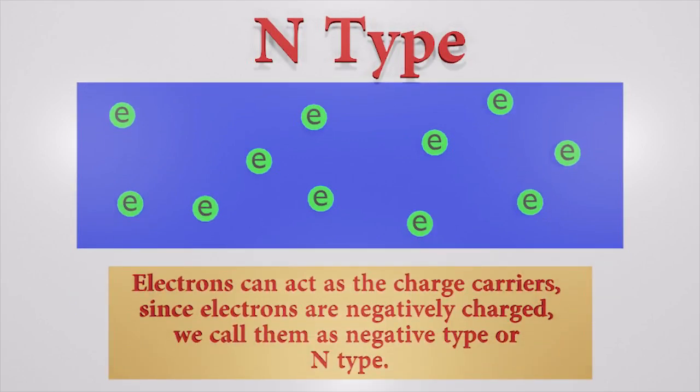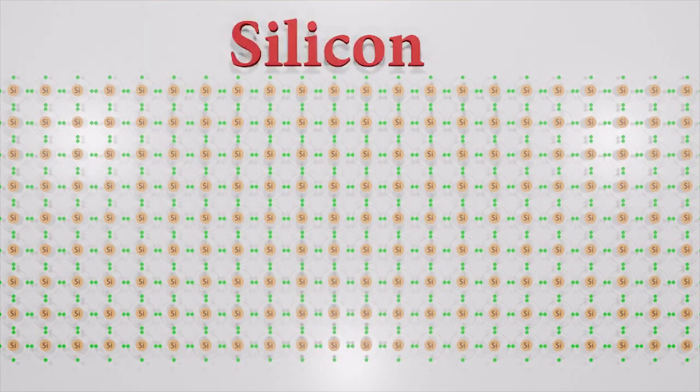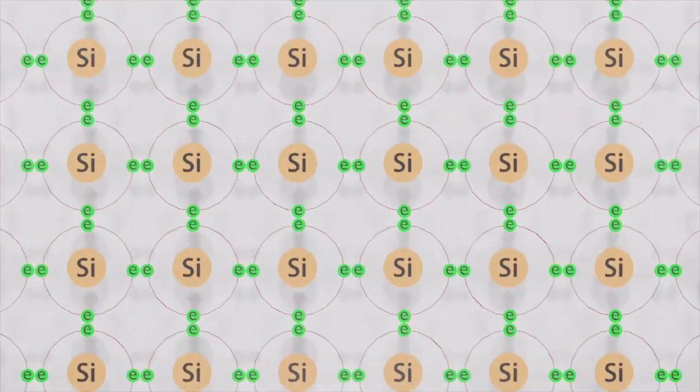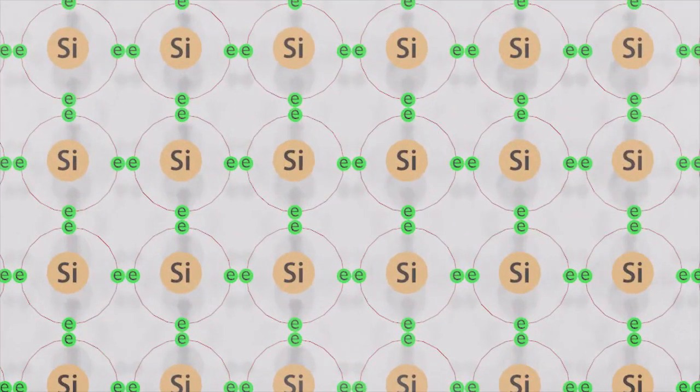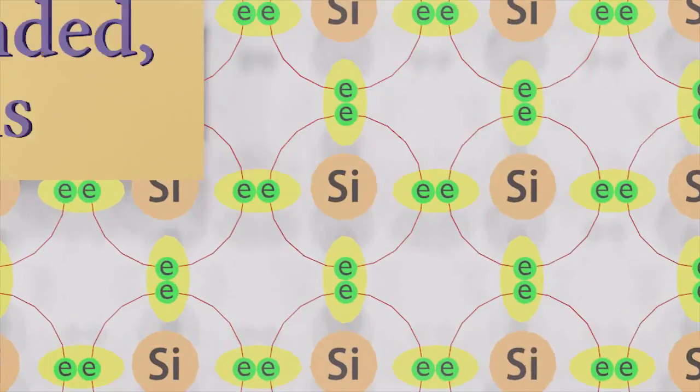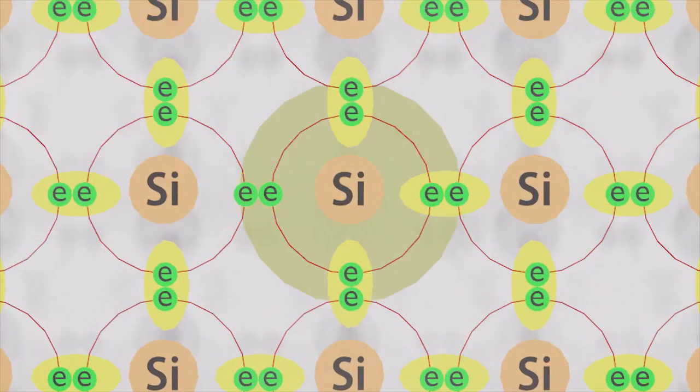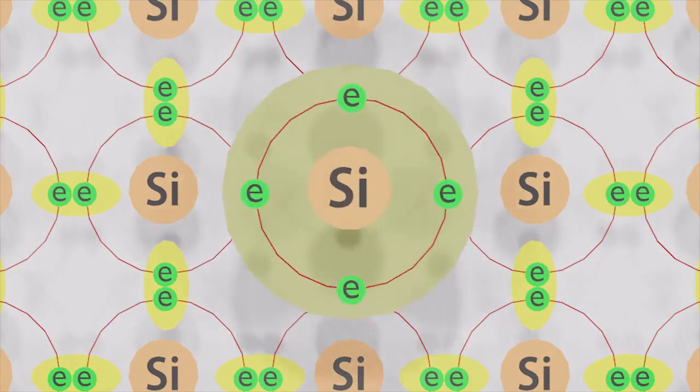Since electrons are negatively charged, we call them negative type or n-type. This is a silicon lattice. Here every silicon atom has four electrons in the valence band and they are all bonded to atoms.